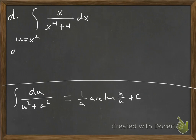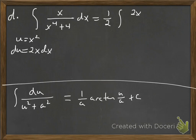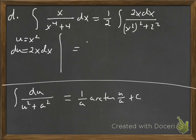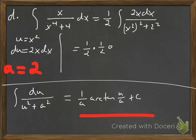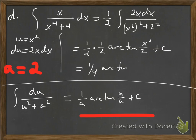So u is x², du is 2x dx. I'll introduce that 2, put 1/2 out front to compensate. We have 1/2 times the integral of 2x dx divided by (x²)² plus 2². Now this fits the form 1/a · arctan(u/a). With a equal to 2, we get 1/2 times 1/2, which is 1/4, times arctan of x² over 2, plus constant of integration.